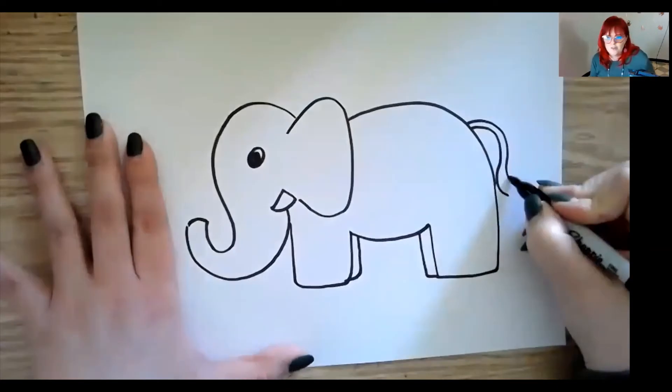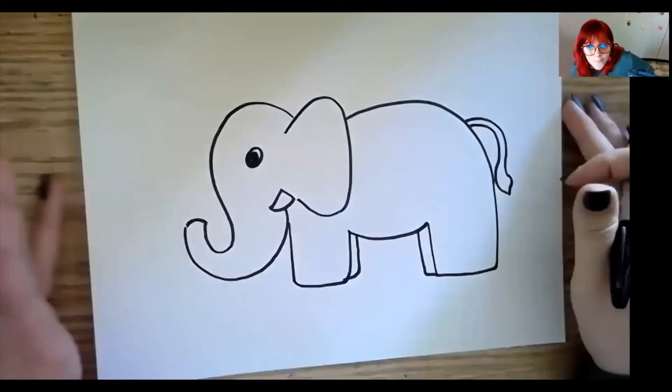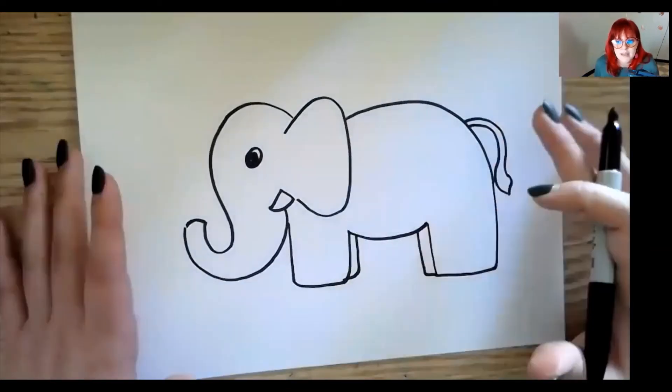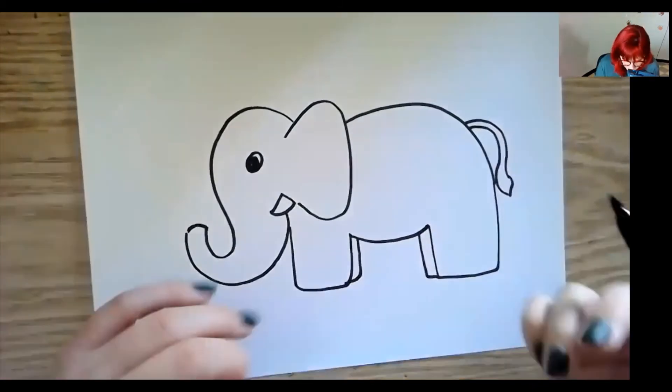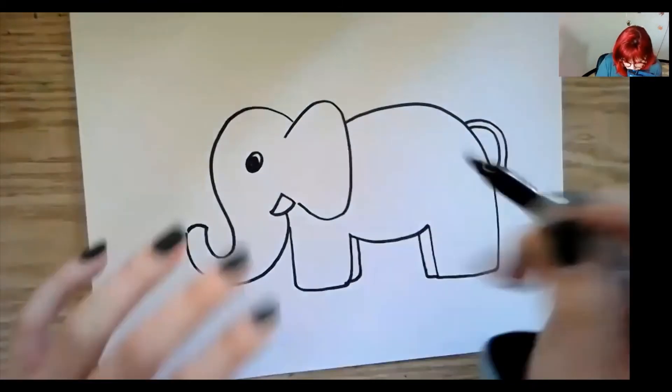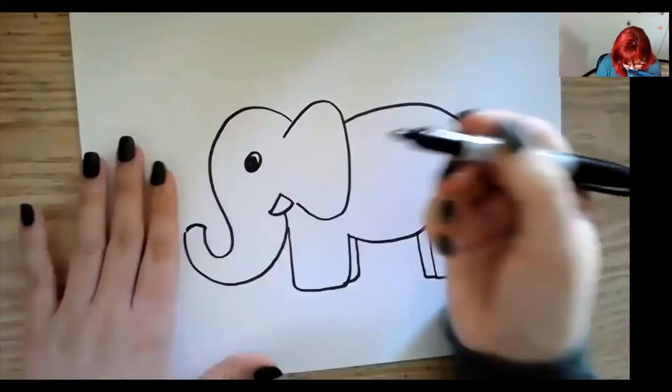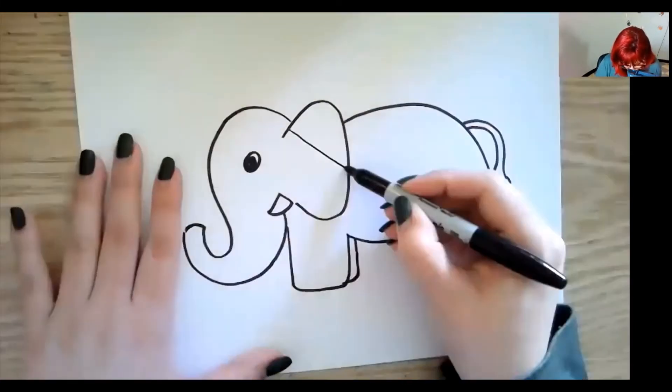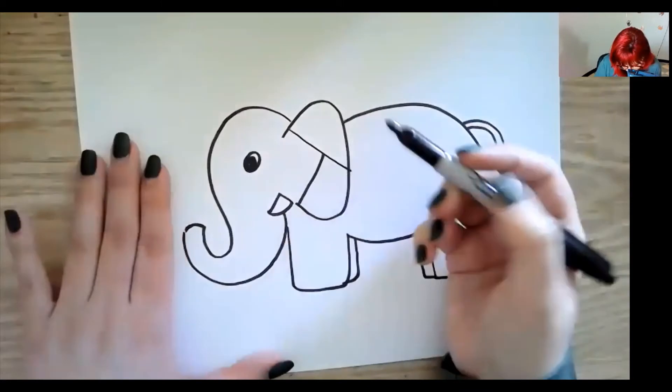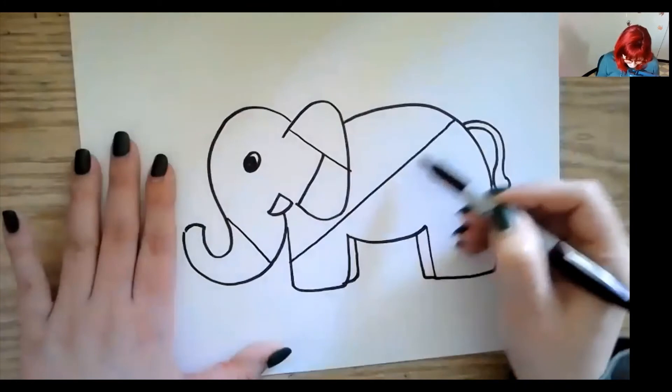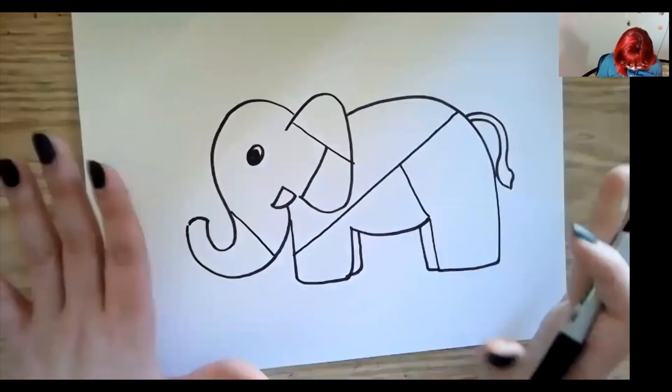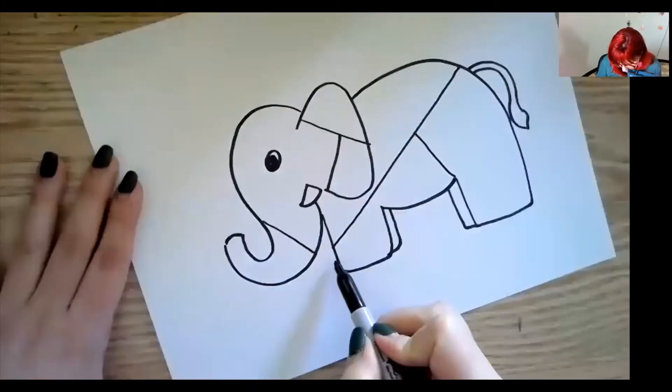All right. So here's our elephant. And because we're studying Romero Brito, he breaks up his animals into smaller shapes. So you can leave it just like this. Or if you want to draw a few straight lines just going through your elephant, you can do that. You do not have to. And I'm also going to add some lines going behind my elephant.